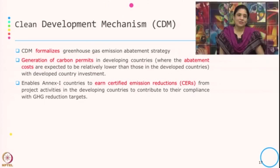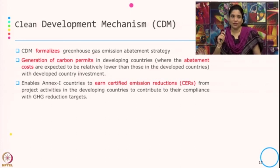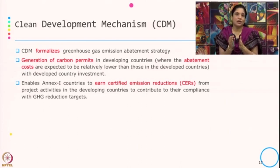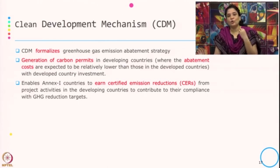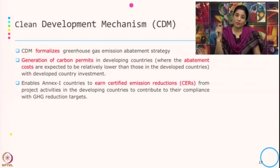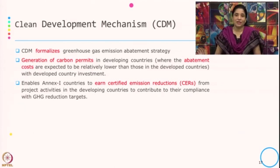As mentioned in the last class, CDM is a part of the flexibility mechanism given by the Kyoto Protocol. The flexibility is in terms of the operational flexibility given to the developed country or the Annex 1 country, on how to achieve or meet their emission reduction target. Under this Clean Development Mechanism, the developed country can invest in any developing country where the cost of abatement is low, and whatever carbon permits they generate from that investment can count toward their GHG emission reduction target or compliance.